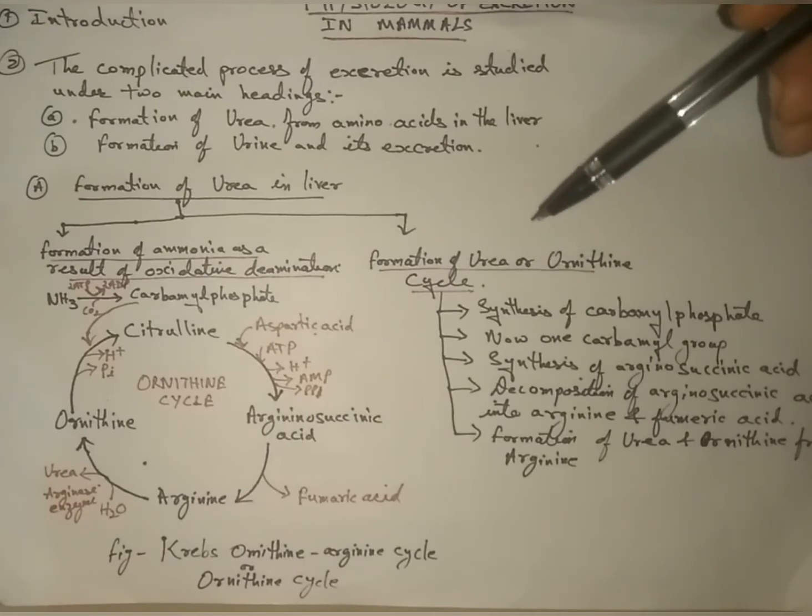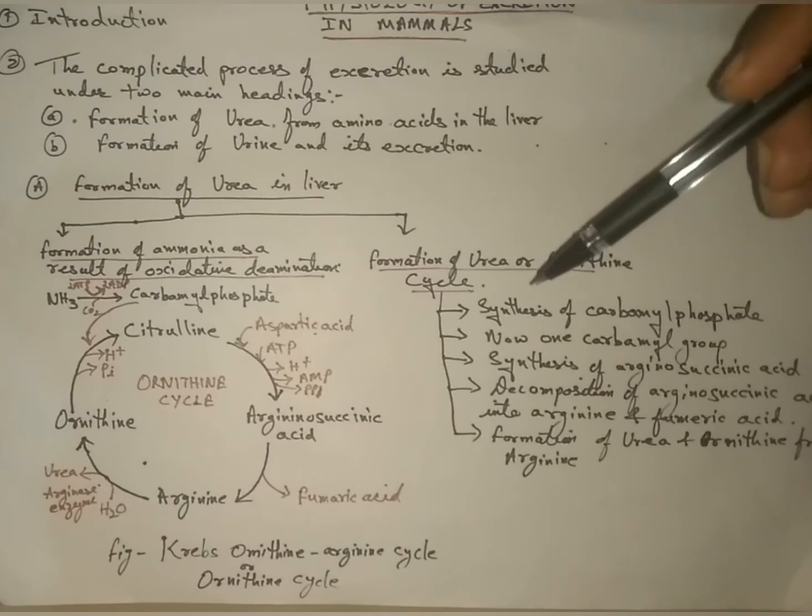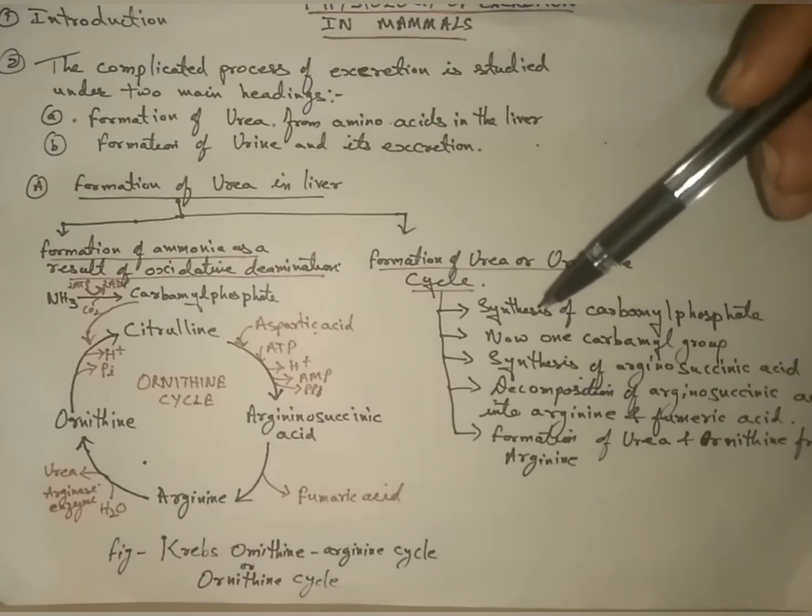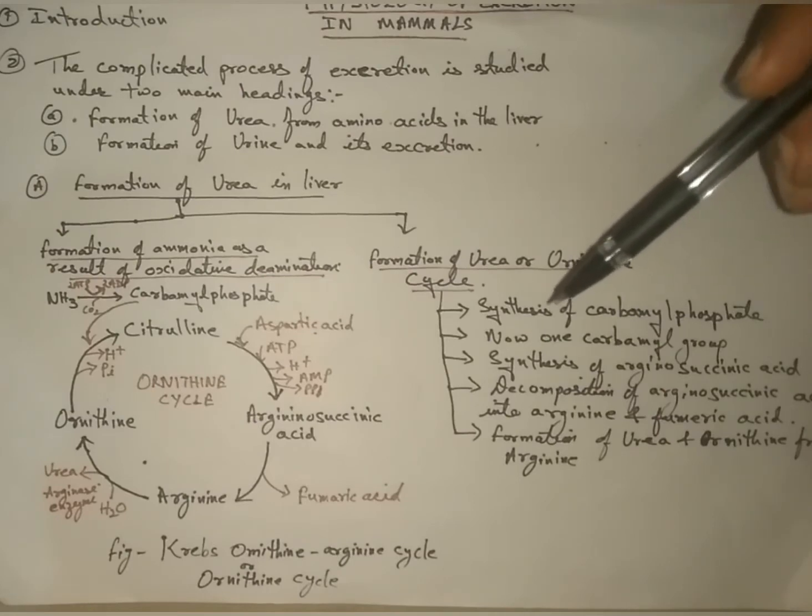In this way, we can see that liver is a complicated chemical laboratory in which from digested food, different assimilable substances are produced, and simultaneously certain waste products are also produced. These waste products are expelled out of the body through blood. Thus, we conclude that liver also plays a vital role in excretion.